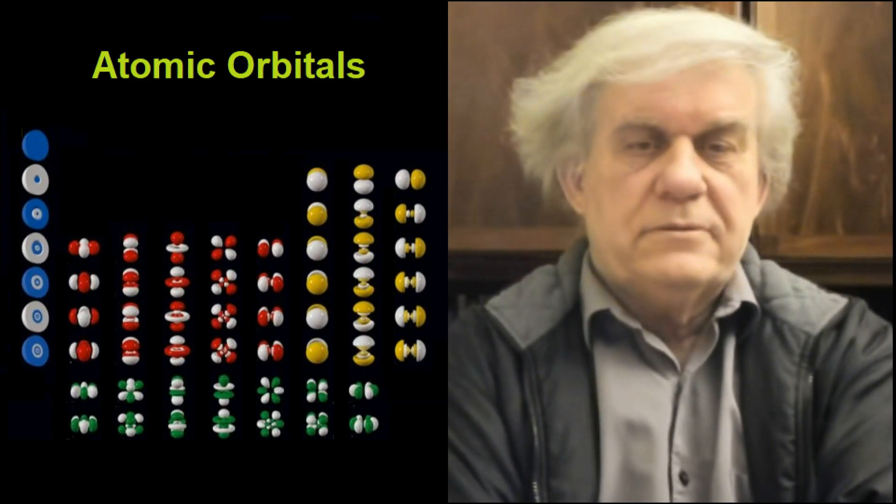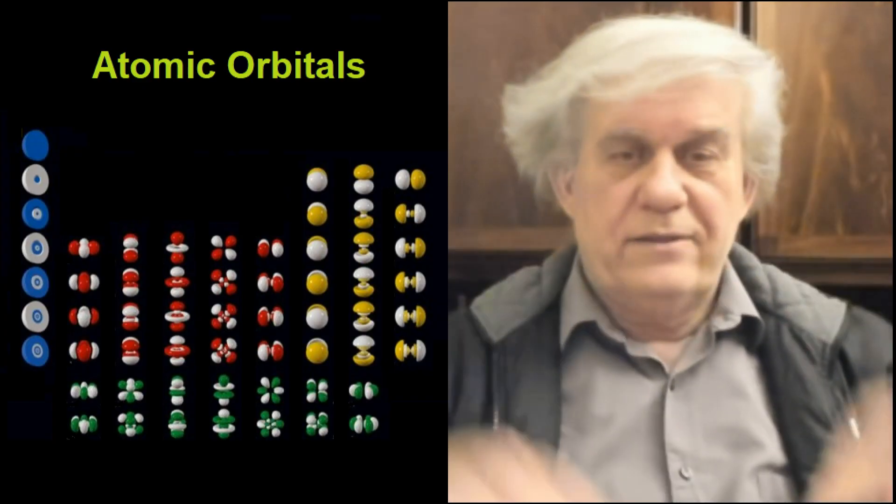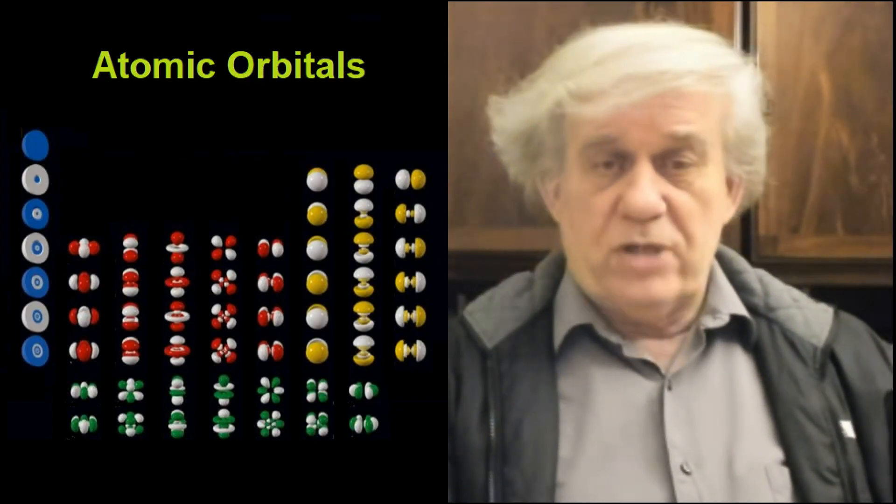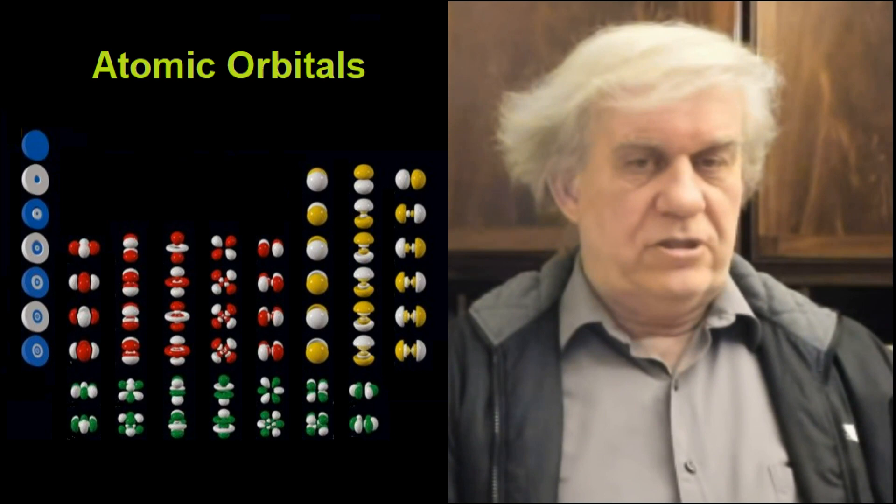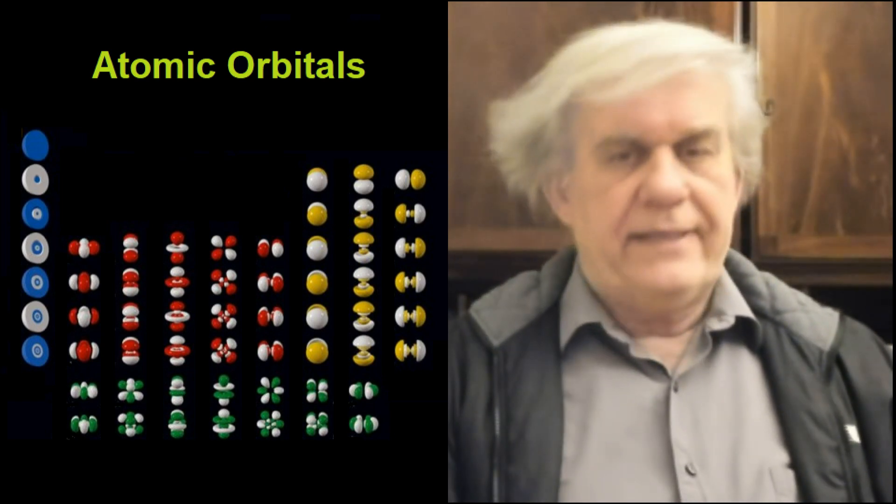There you see the atomic orbitals, and you can see they're all balloons, and you wonder what all those balloons are. We're going to find out that those are regions in which you can find the electron beads.